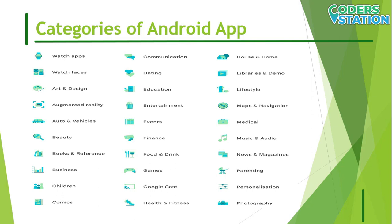The beauty category includes makeup tutorials, makeover tools, hair styling, beauty shopping, and makeup simulators. Books and references includes book readers, reference books, textbooks, dictionaries, thesauruses, and wikis.